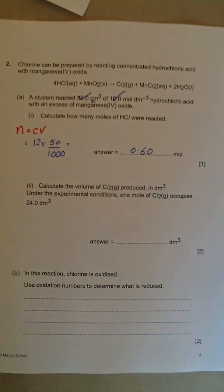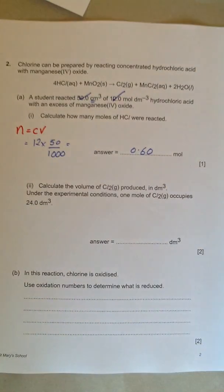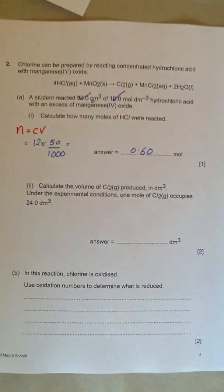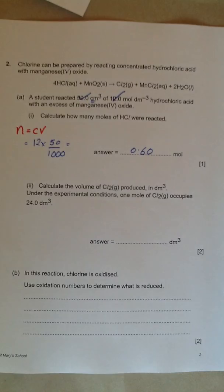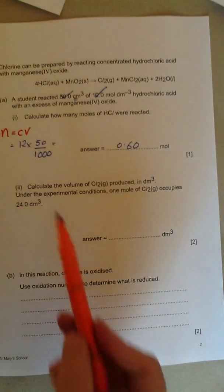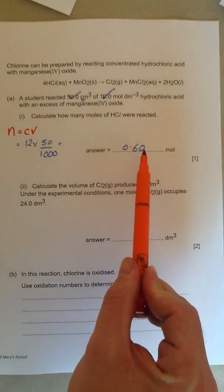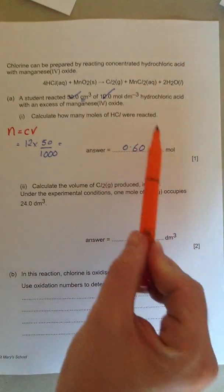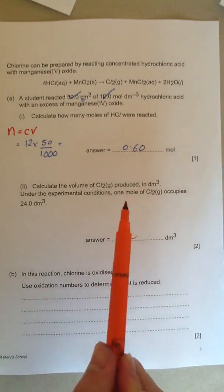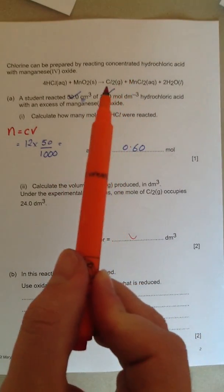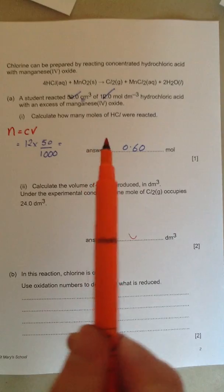Second part of the question says, calculate the volume of Cl2 produced in decimetres cubed. Under the experimental conditions, one mole of Cl2 occupies 24.0 decimetres cubed. So with all these questions, look at the equation, look at the numbers you've used before. Can you use that number somewhere in this part of the question? How do we know the number of moles of chlorine that were produced?